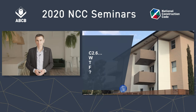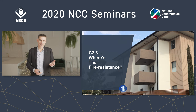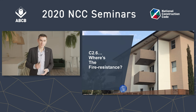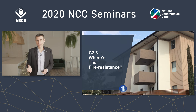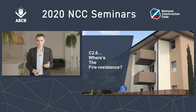C2.6. WTF — where's the fire resistance? C2.6 is the part of the BCA which requires an FRL, and sometimes buildings are going up without it. Now I didn't see this particular building under construction, so I'm not saying it doesn't comply. In fact there are clues that tell me this building likely does comply with C2.6. The reason I've shown a photo of this building is that it nicely illustrates some things about C2.6.